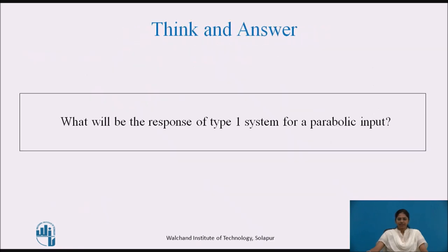Try to think and answer: what will be the response of a Type 1 system for a parabolic input? Pause the video for some time and note down the answer in your book.